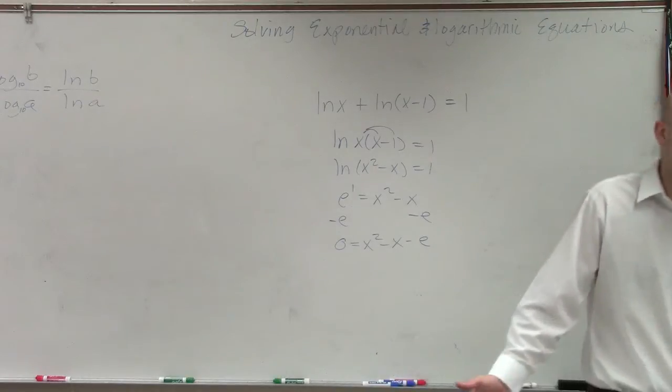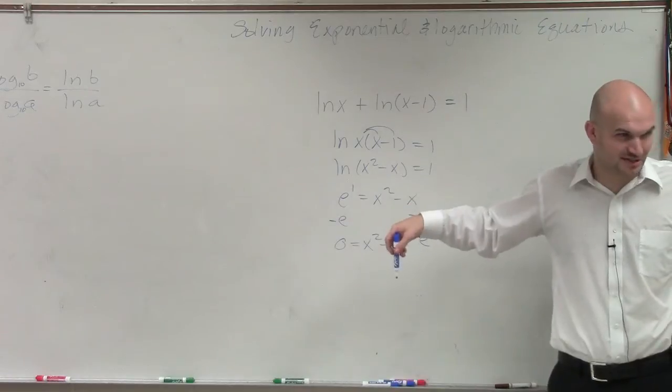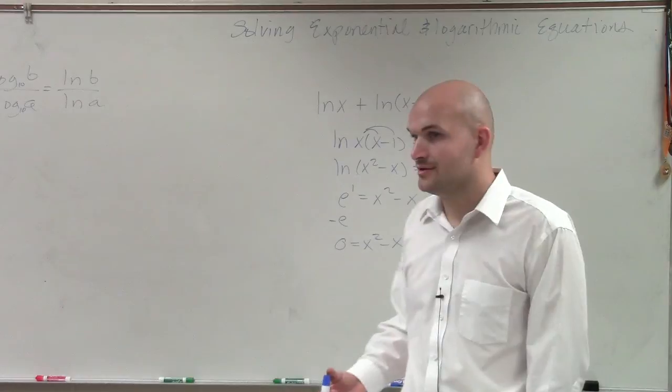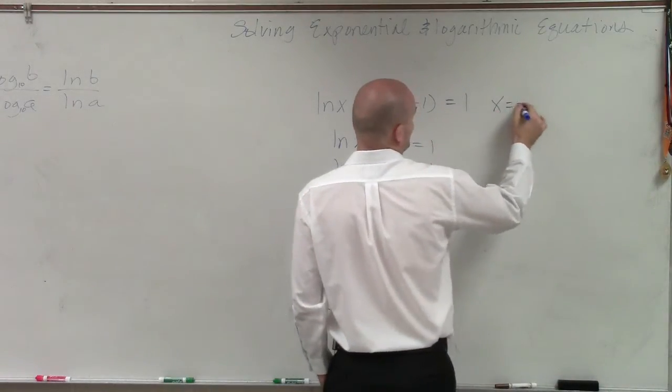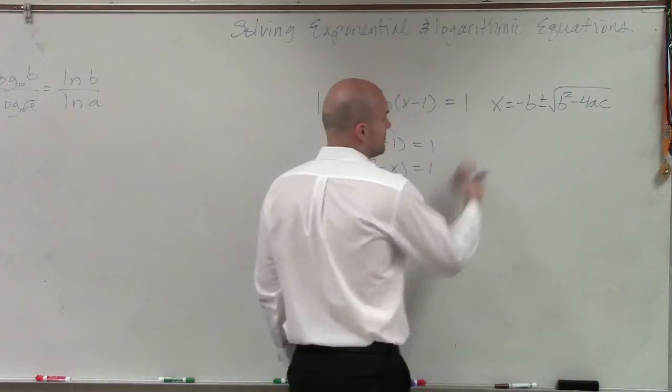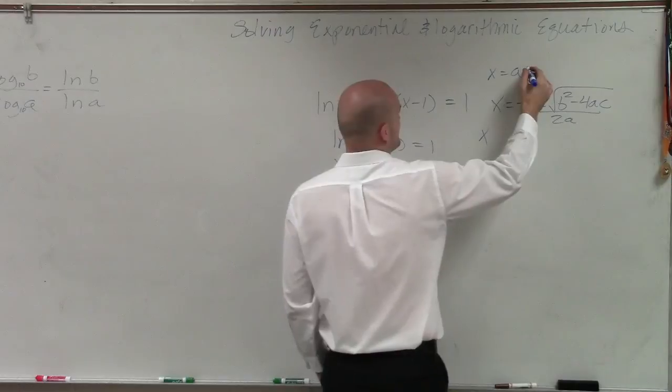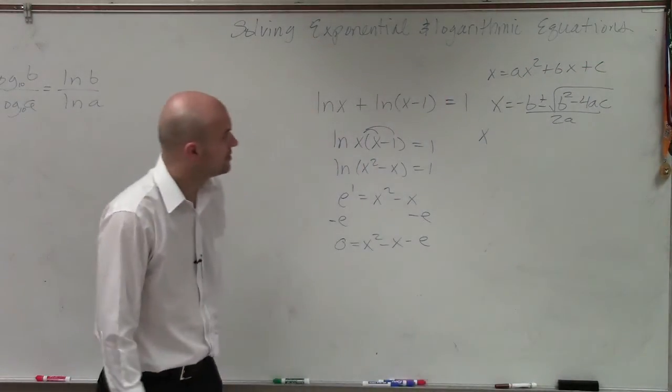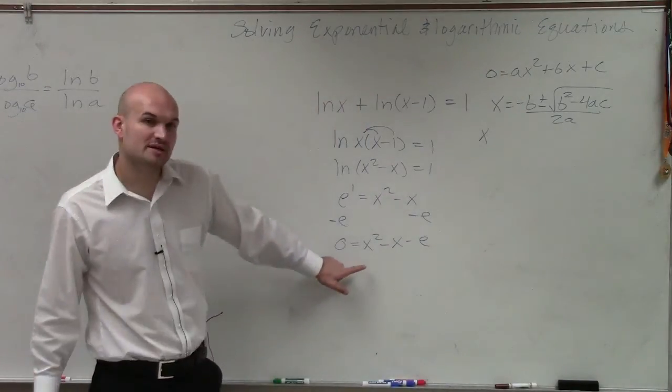So to do a problem like this, we always want to look to factoring, right? But can we factor this e, as an irrational number? No. So if we can't factor something, you can use the quadratic formula. So remember, quadratic formula x equals opposite of b plus or minus the square root b squared minus 4 times a times c, all over 2a. For ax squared plus bx plus c.